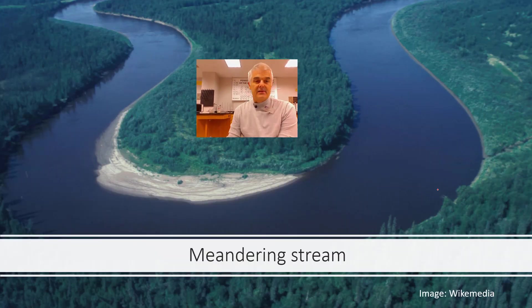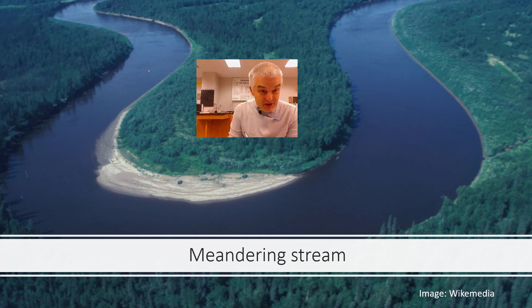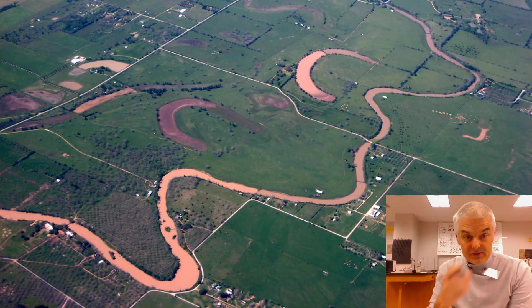So a meandering river is like this. It's like a curvy river. They curve and they meander back and forth, right? That's a meandering stream. Now, here's another example of a meandering stream, but something weird.